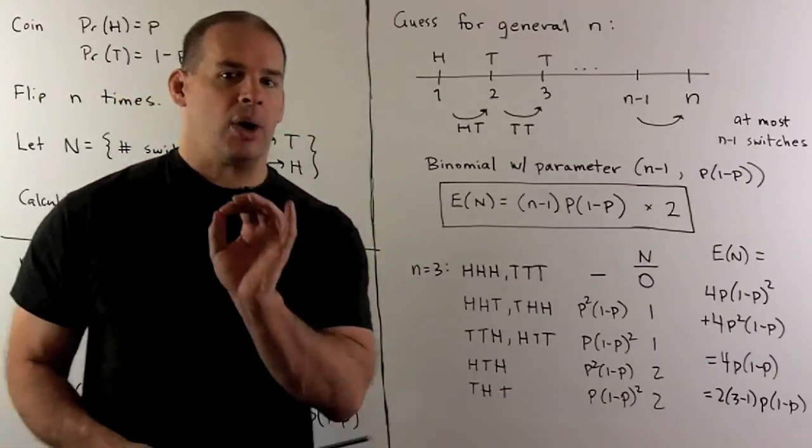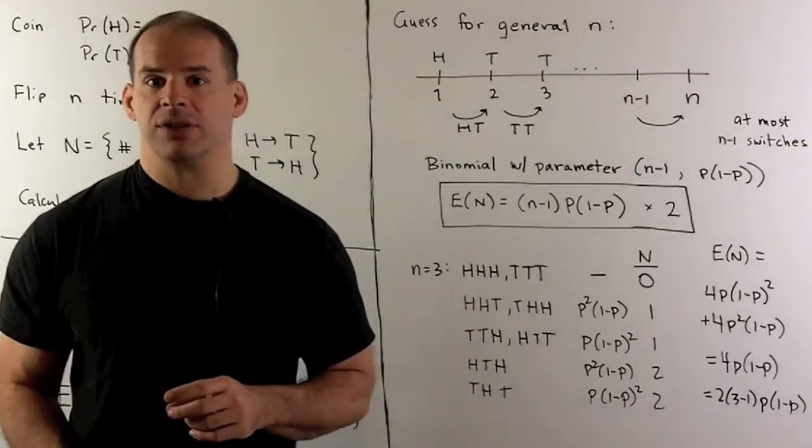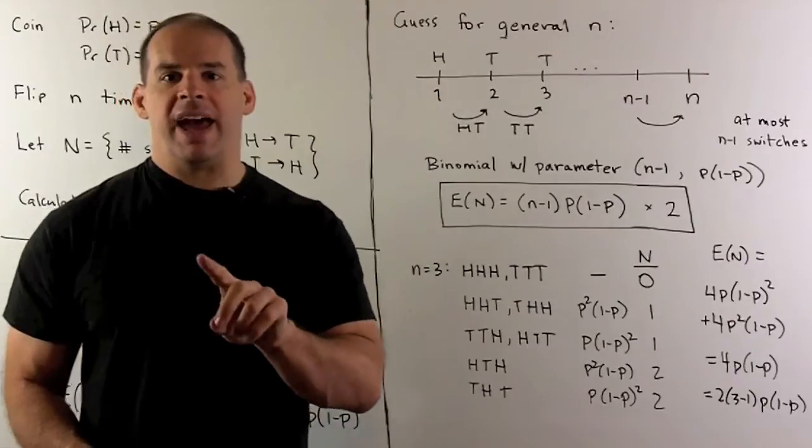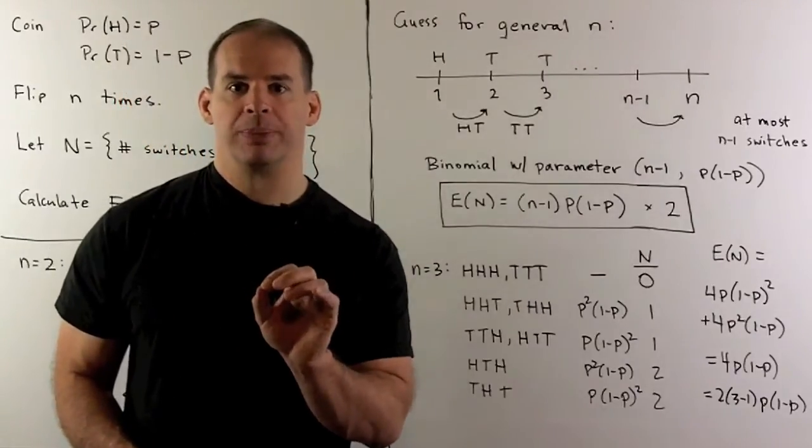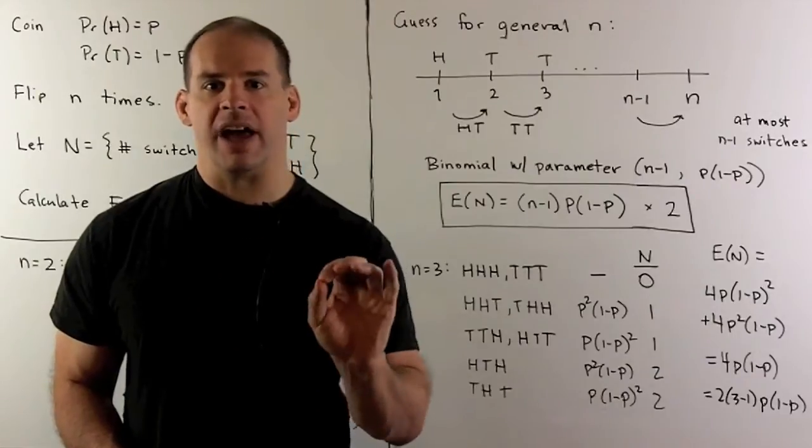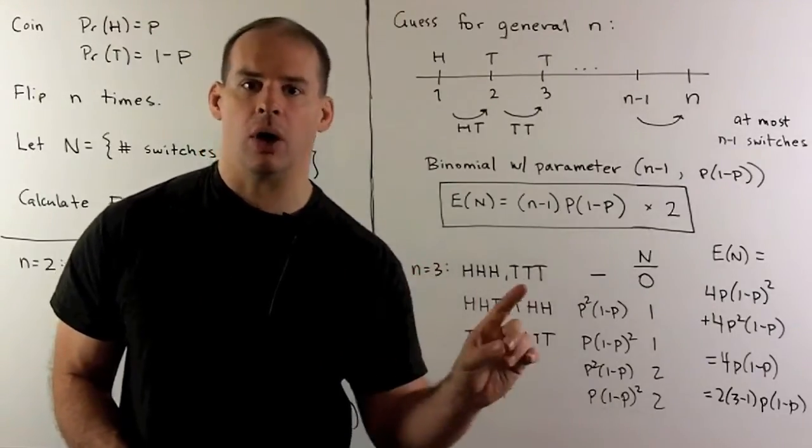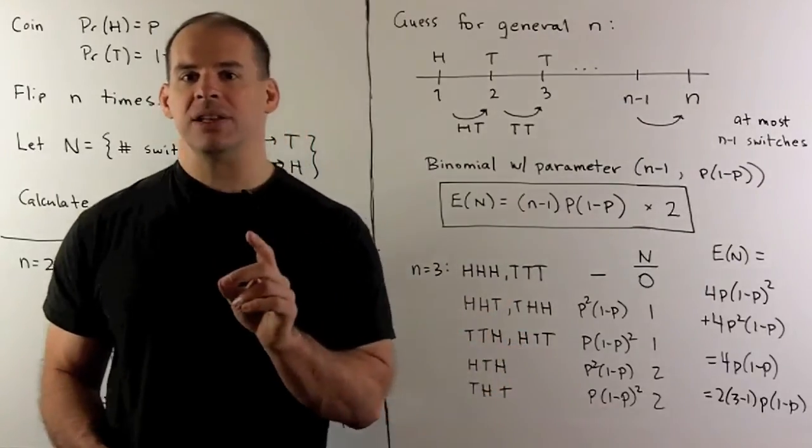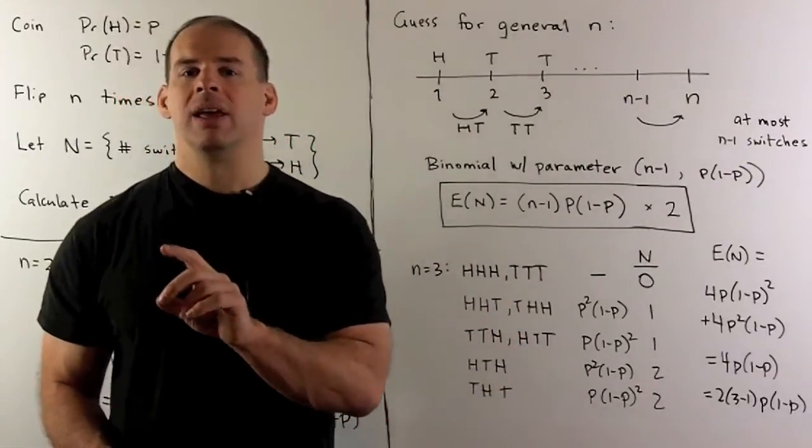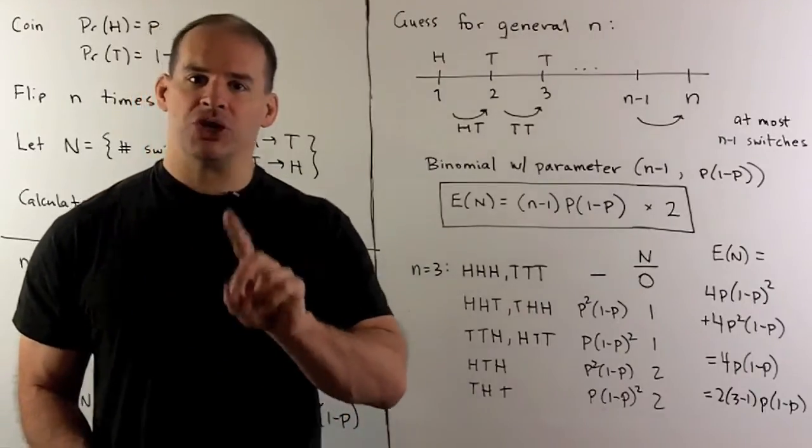Now, how do I completely describe one of our trials? We take the first flip, say it's a heads. Then I'll keep flipping heads until we get to the first switch. So, that'll be heads going to tails. Then, we'll keep flipping tails until the second switch, which will be tails going to heads, and so on. That means, to completely describe a trial, need only tell you the value of the first flip and the position of all the switches.